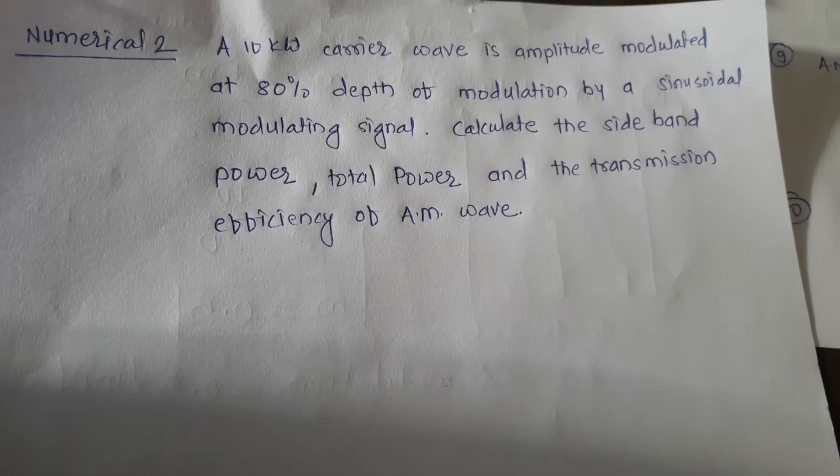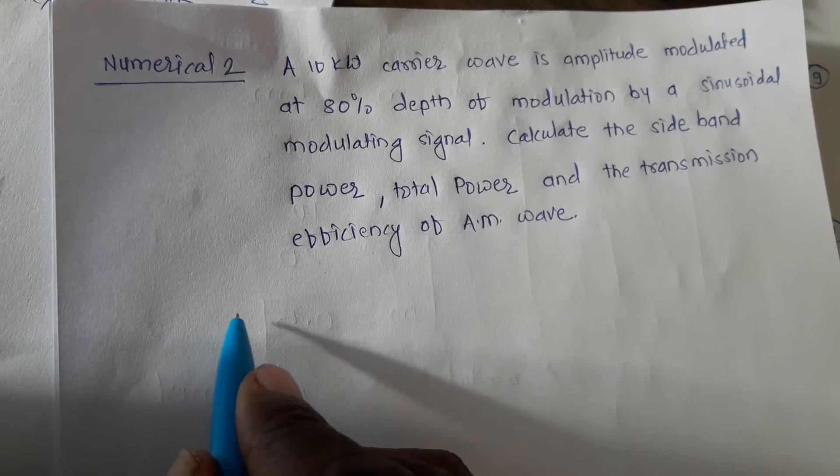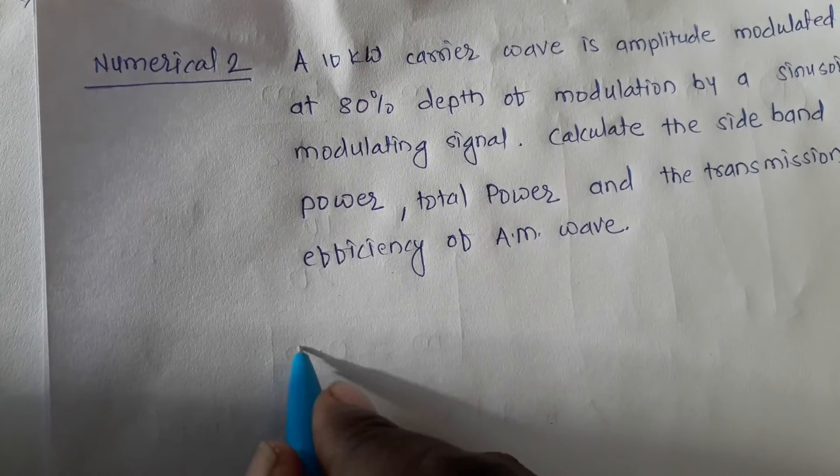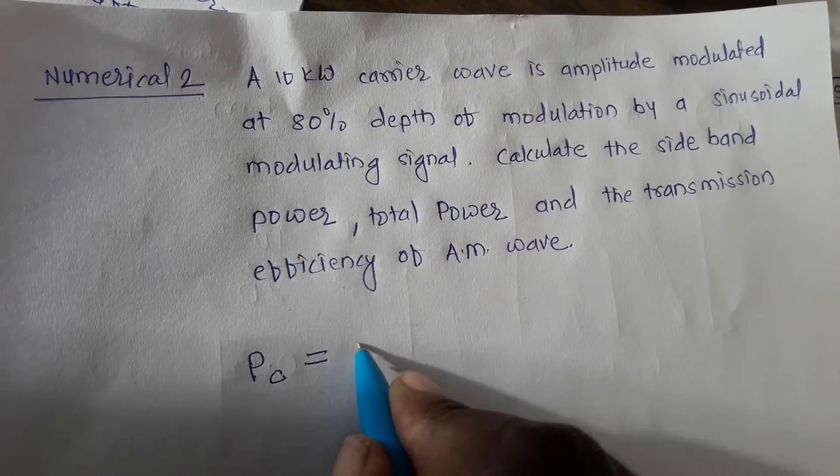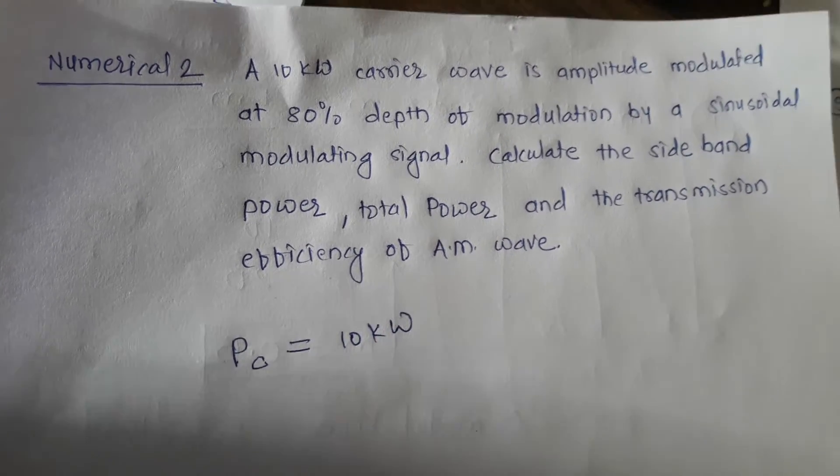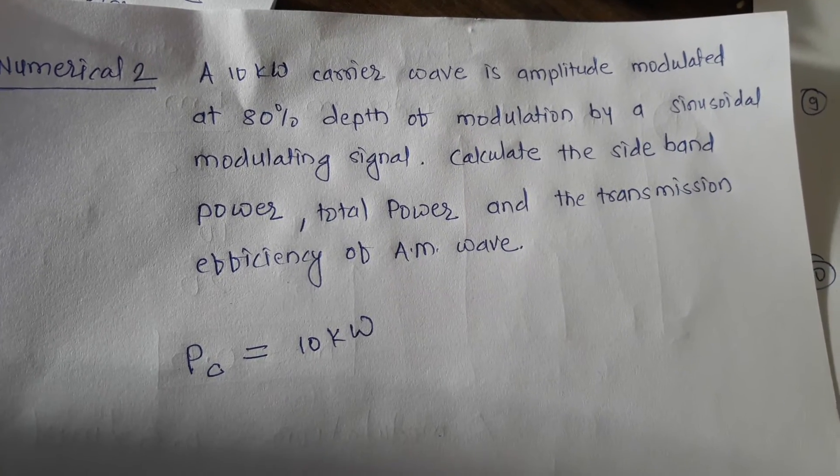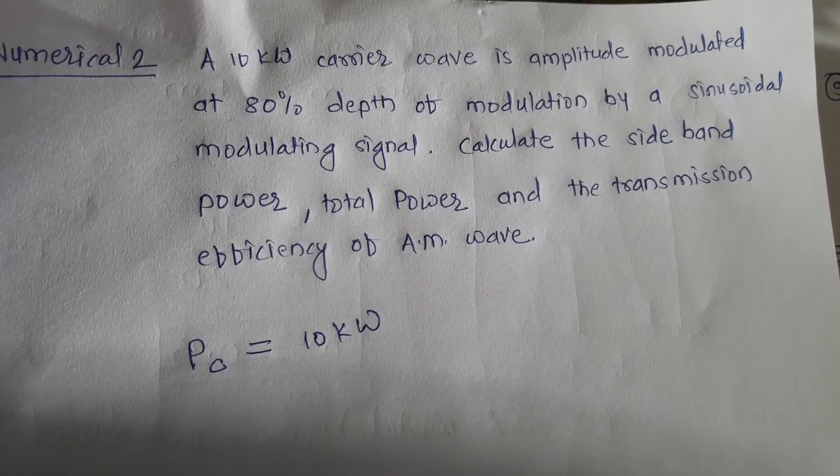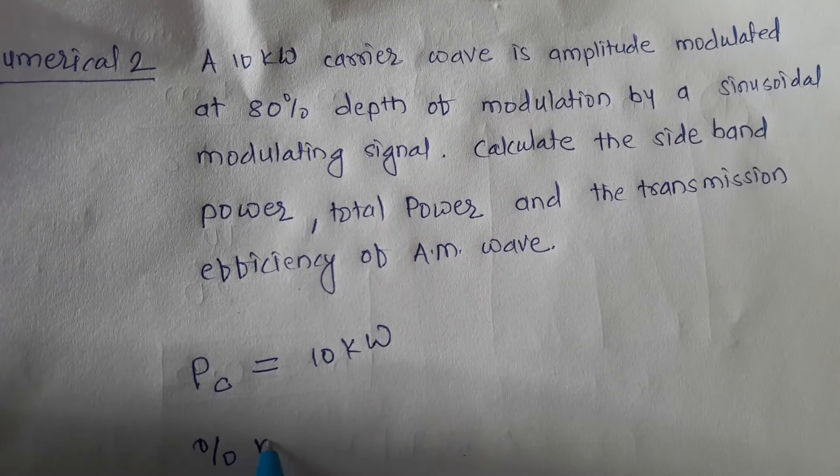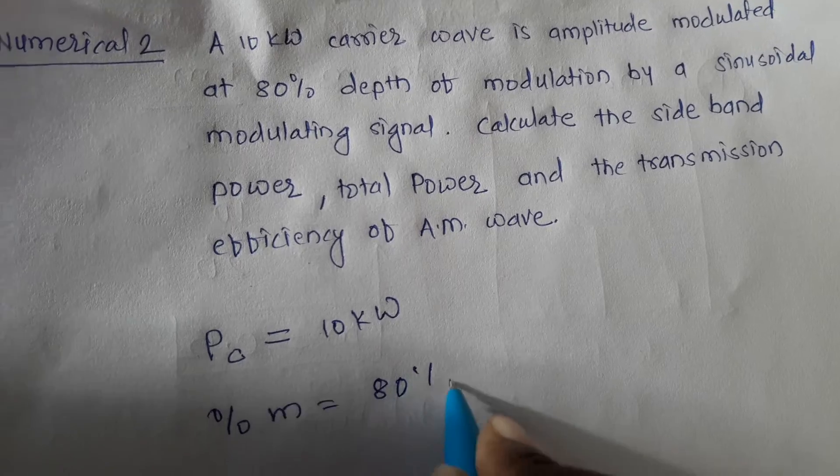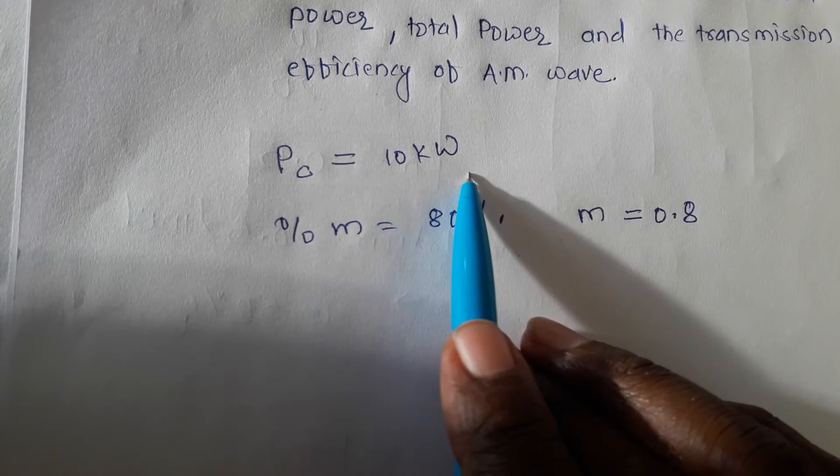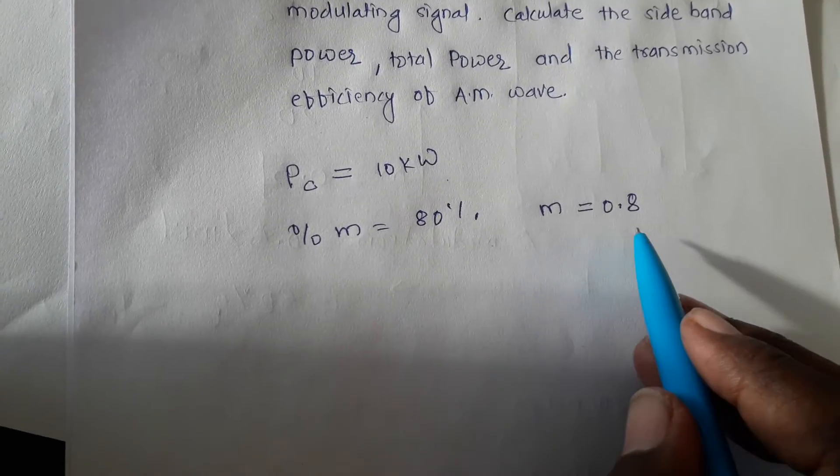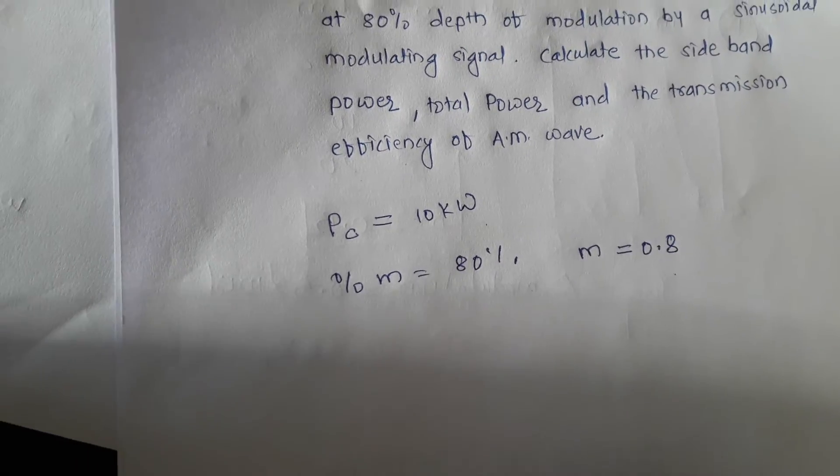Now let us see what data is given in this numerical. Carrier power PC equals 10 kW. The amplitude modulation is done at 80% depth, so percent m is 80%, which means m equals 0.8. So the carrier power is 10 kW and the modulation index is 0.8.